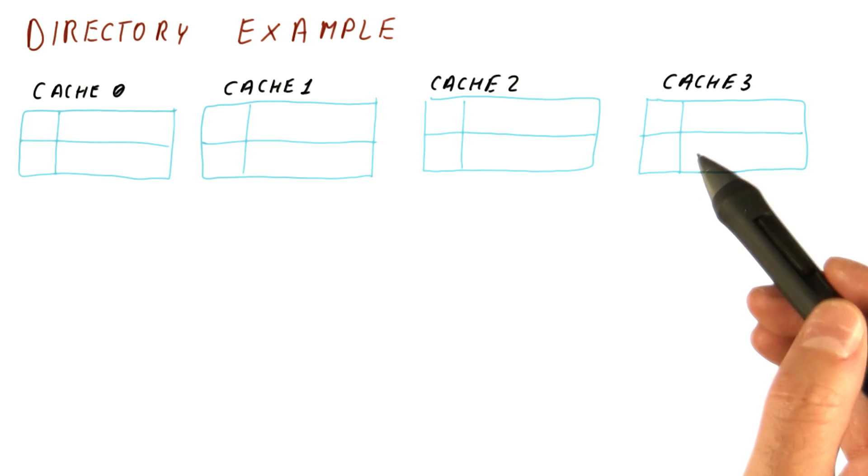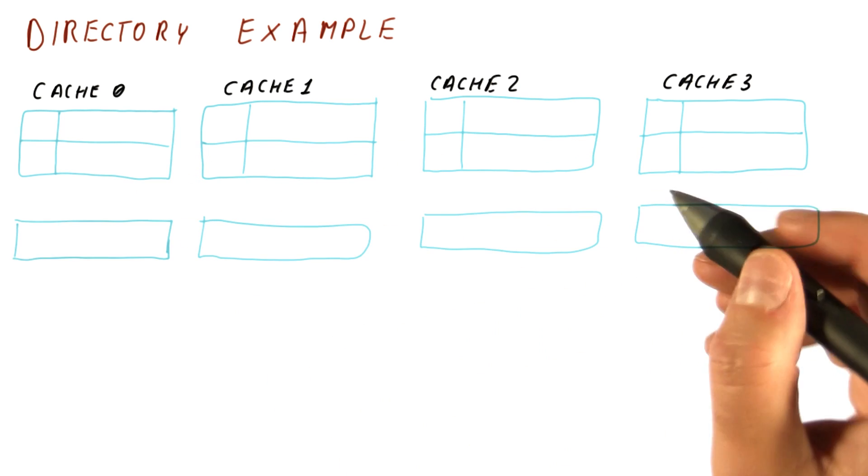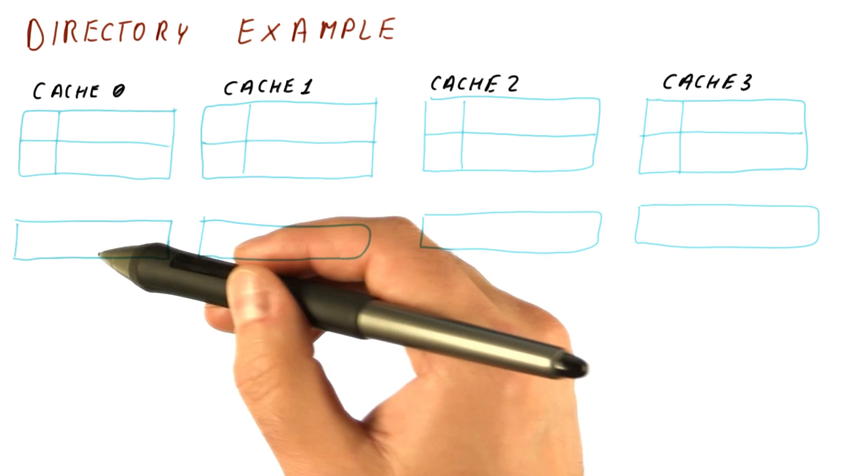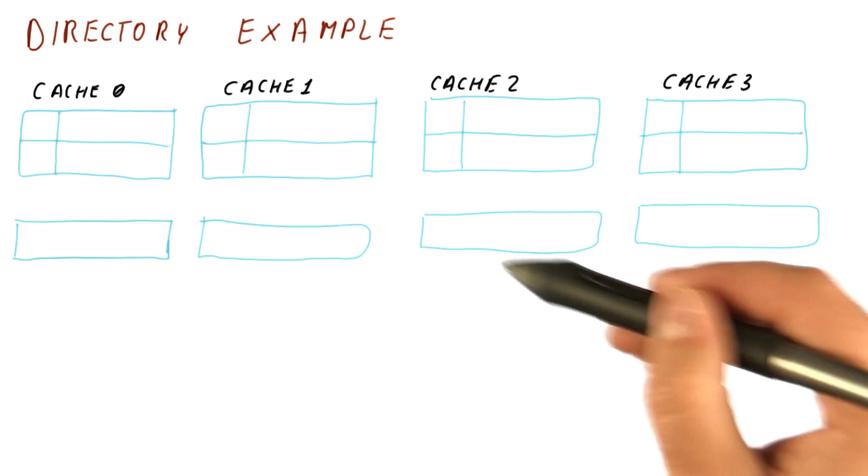Here we have four cores, each with its own cache. And also next to each core is a slice of the directory. Let's assume that each slice just keeps track of one block.